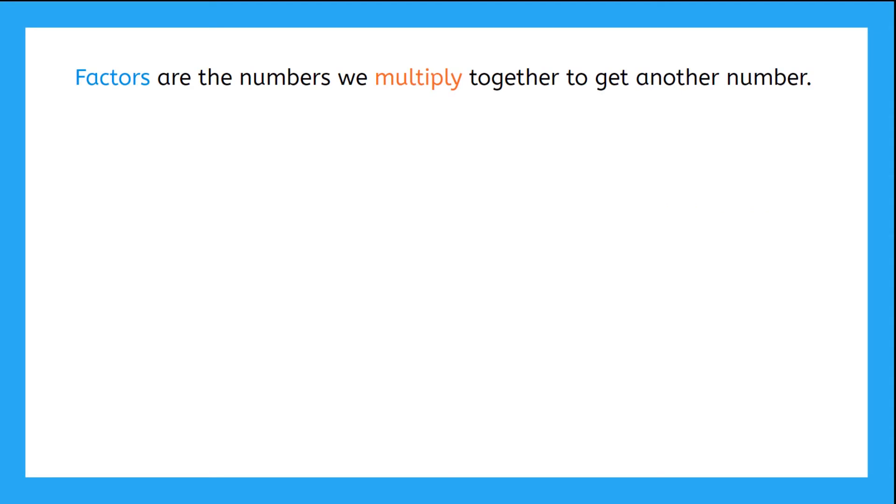Factors are the numbers we multiply together to get another number. For example, if we have the equation 4 times 3 equals 12, 4 and 3 are the factors of 12. We can also find the factors of expressions like 6y. The factors would be 6 and y, since when we multiply them together we get 6y.